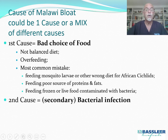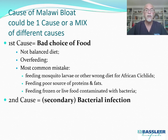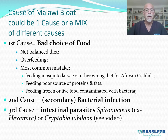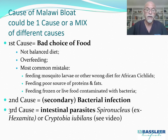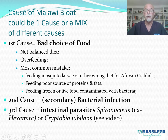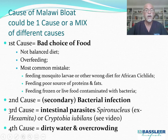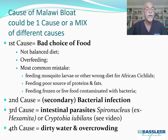A second cause could be a secondary or primary bacterial infection infecting the fish internally in the organs and intestine. Number three: parasites in the intestine or gut, like Spironucleus — formerly called Hexamita — or Cryptobia eubilans, another parasite. I will show these in videos later on. And the fourth cause is dirty water, bad filtration, lack of water changes, and overcrowding. All these could be causes of Malawi bloat.